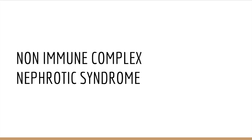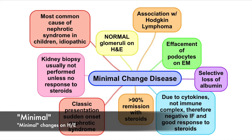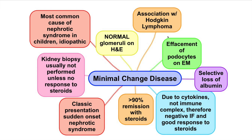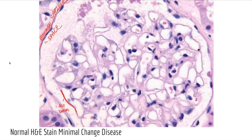When talking about nephrotic syndrome, one good way to break it down is to think about non-immune complex mediated pathologies. For example, minimal change disease — this is the most common cause of nephrotic syndrome in children, and it's very common on exams. Usually they have normal findings on H&E stain. Here is an example of a normal H&E stain showing the barrier, Bowman's capsule, and the space. In minimal change disease this will be normal.